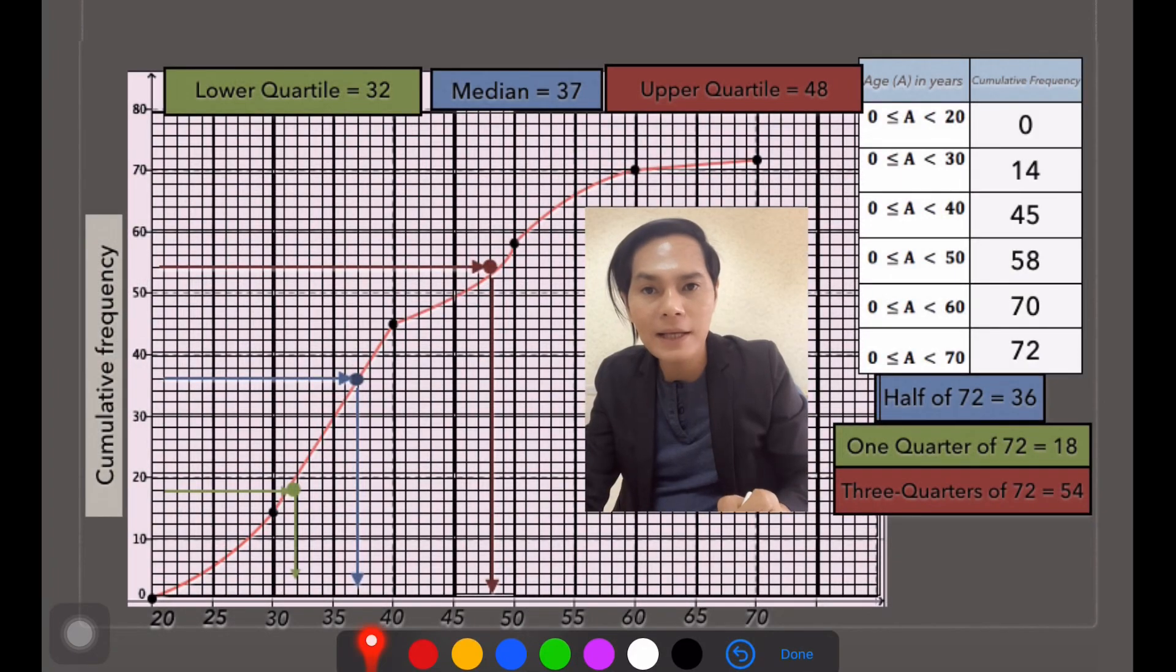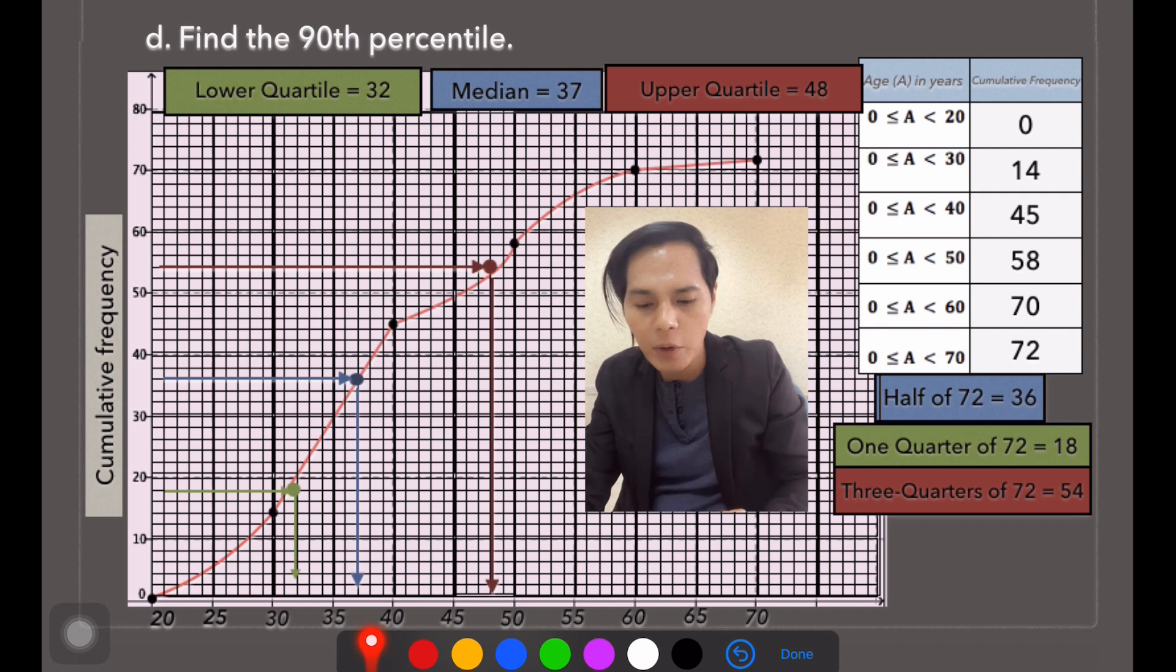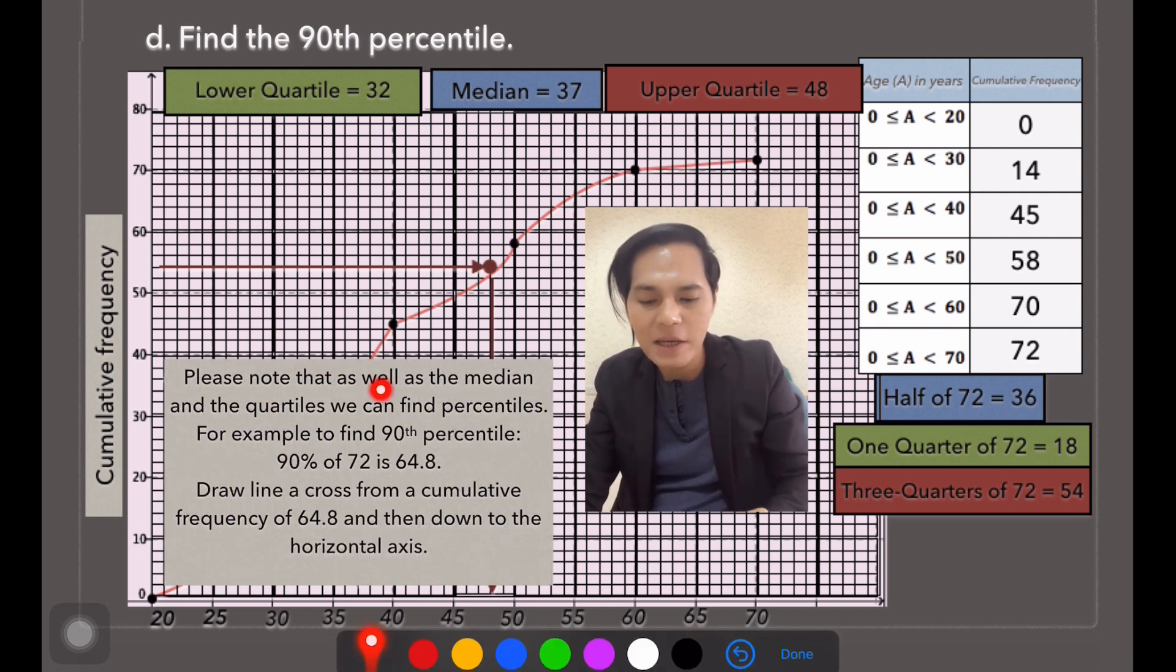We are down to our last question, which is find the 90th percentile. Please note that as well as the median and the quartiles, we can find also the percentiles.